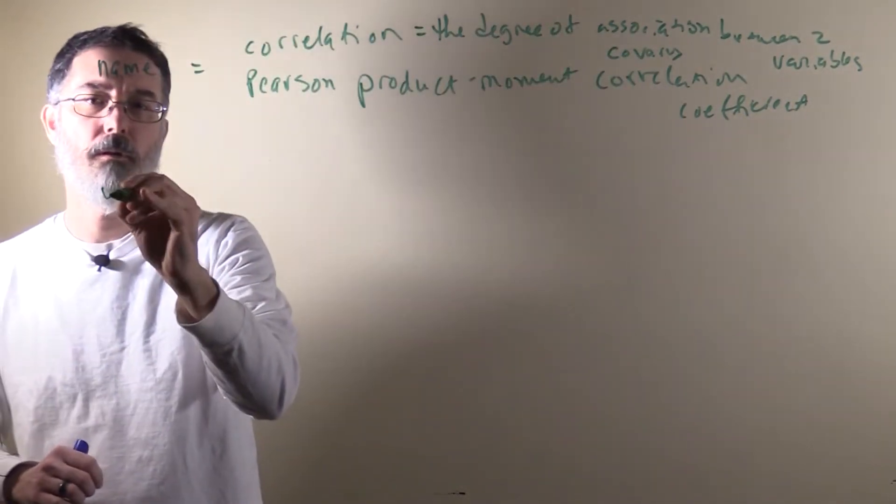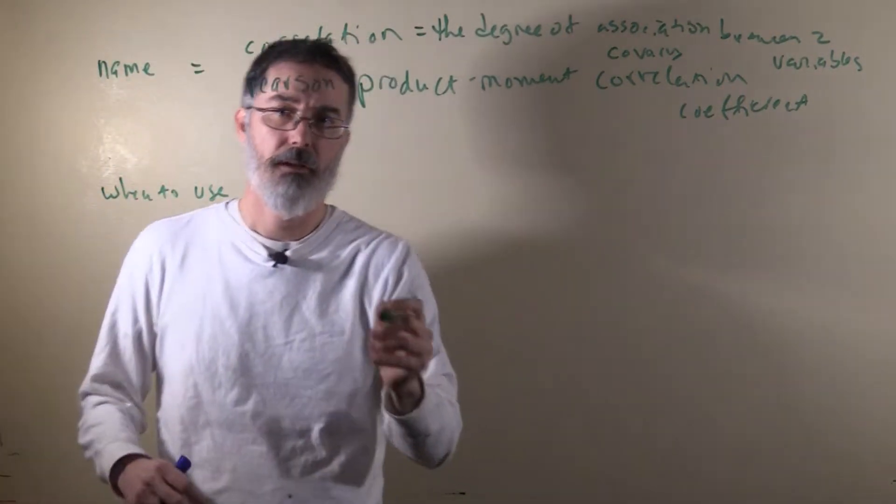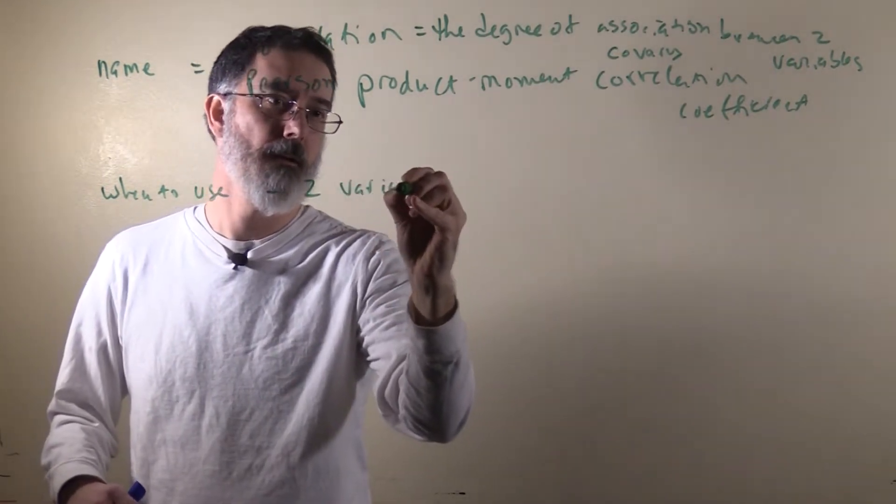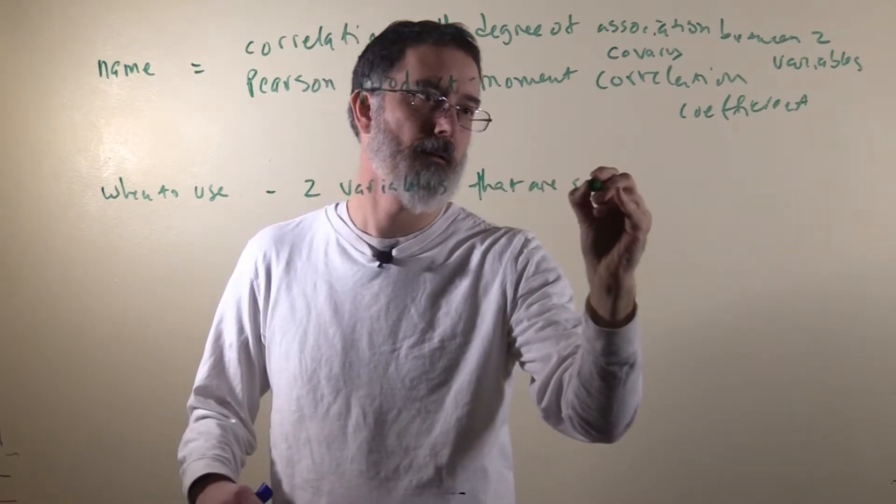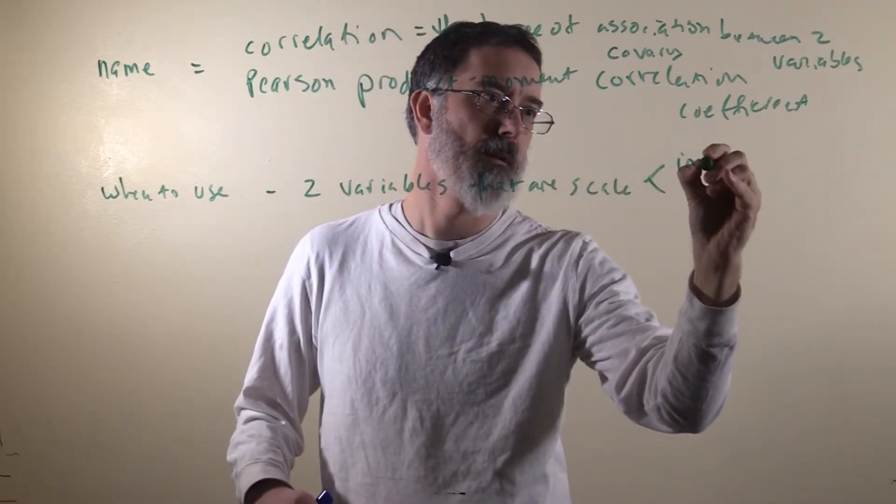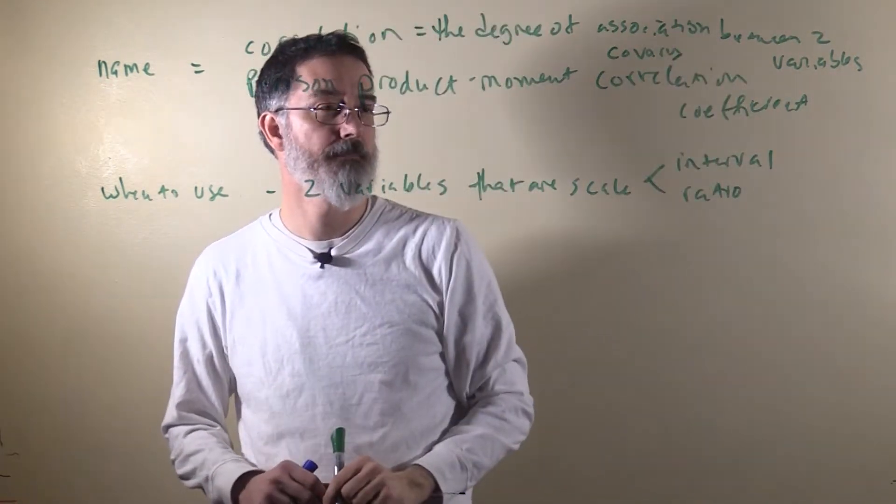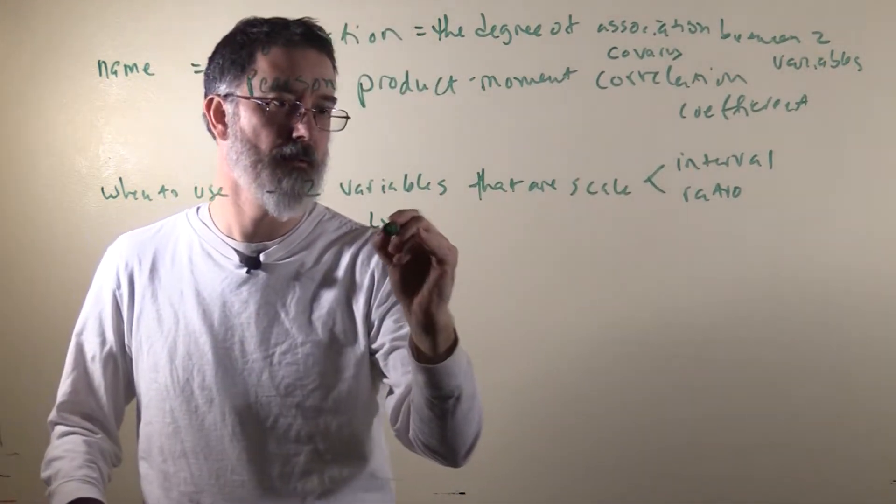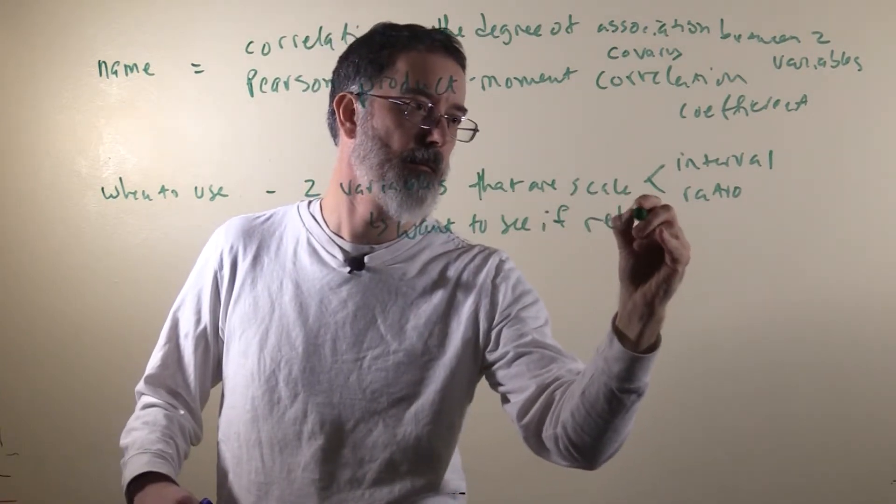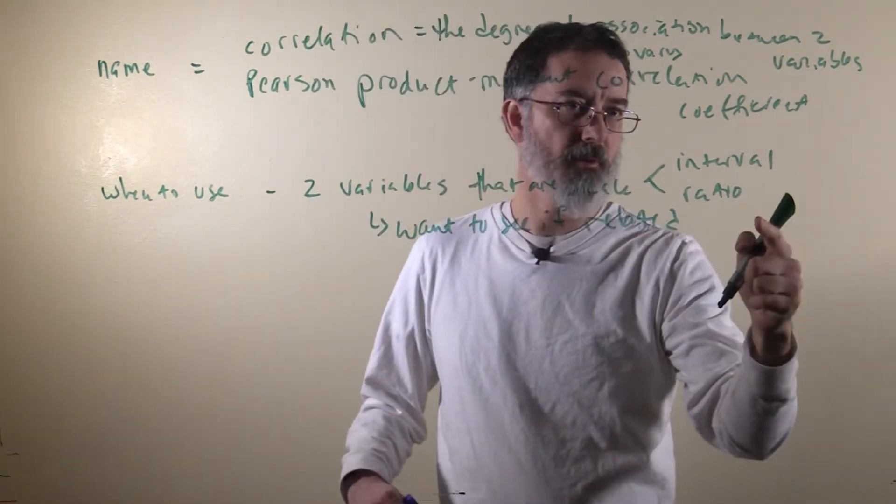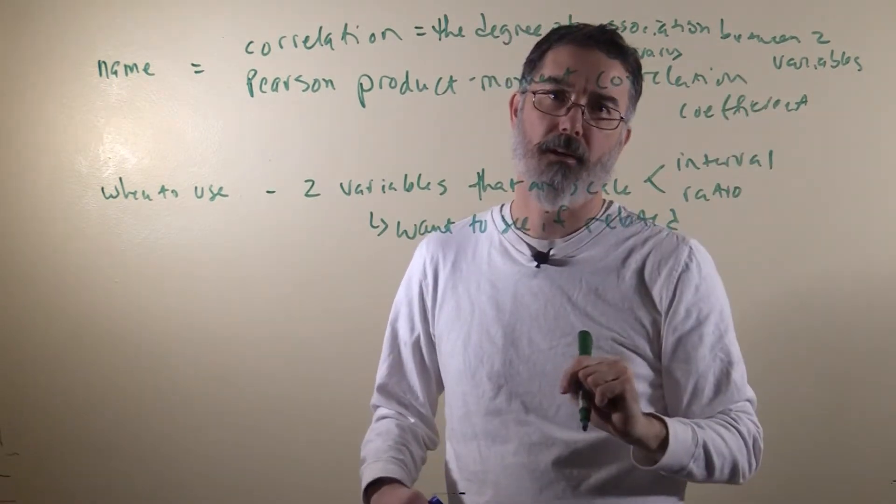You use correlations if you have two variables that are scale. And by that I mean interval or ratio, you use this particular correlation in that case, and you want to see if they are related. If your two variables are not interval and ratio, if they are ordinal for example, then you will have to use a different kind of correlation coefficient.